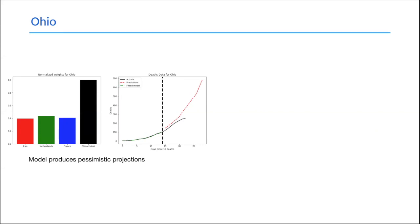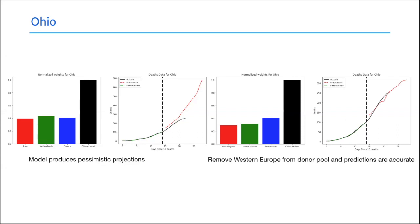For Ohio, if I build a model including Western Europe, my model gives pessimistic predictions. If I remove Western Europe, the prediction becomes more accurate. Ohio was one of the earliest states to react and implement lockdown, so its interventions differed from what happened in Western Europe. It's not entirely clear what the cause is, but picking the right donor pool gives a very good prediction, and picking a different donor pool gives you counterfactuals.